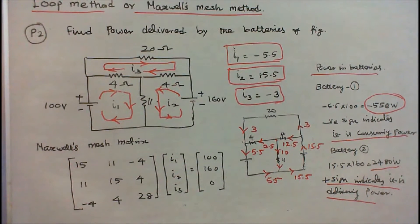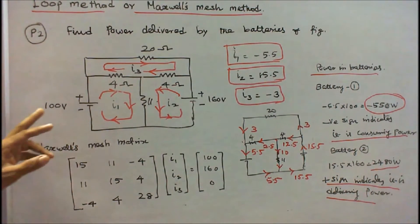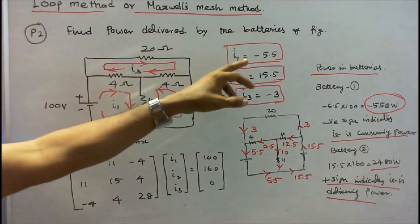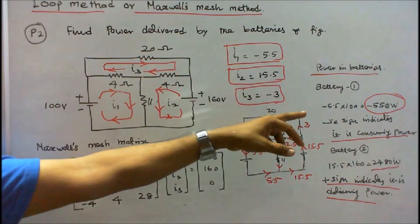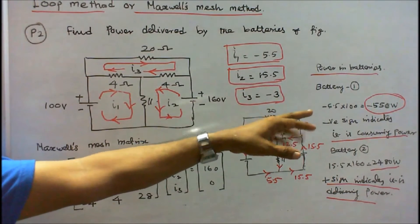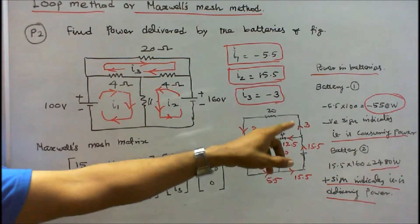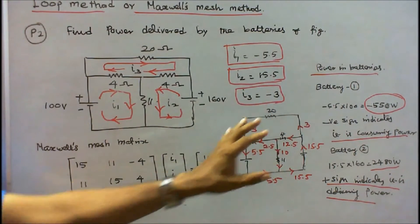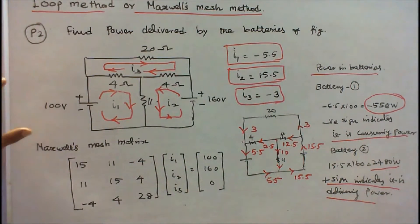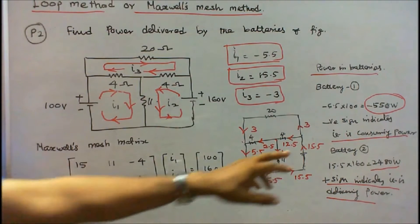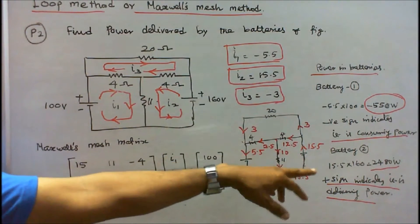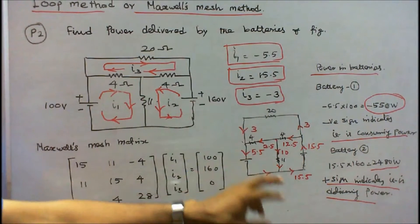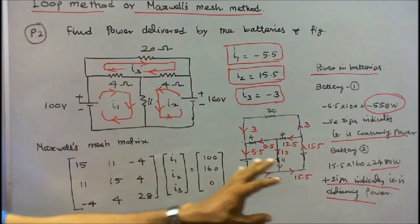Next I find the power supplied by the batteries. For the 100 volt battery, current is minus 5.5 amps, so power = minus 5.5 × 100 = minus 550 watts. The negative sign indicates it consumes power — this battery acts as a load. For battery 2: 15.5 × 160 = 2480 watts. The positive sign indicates it is delivering power.